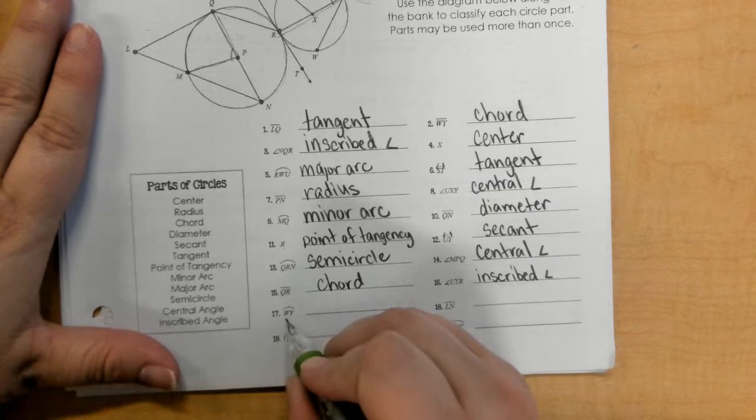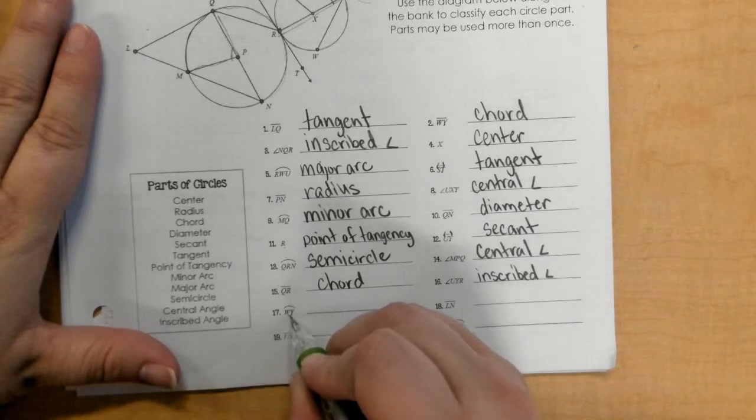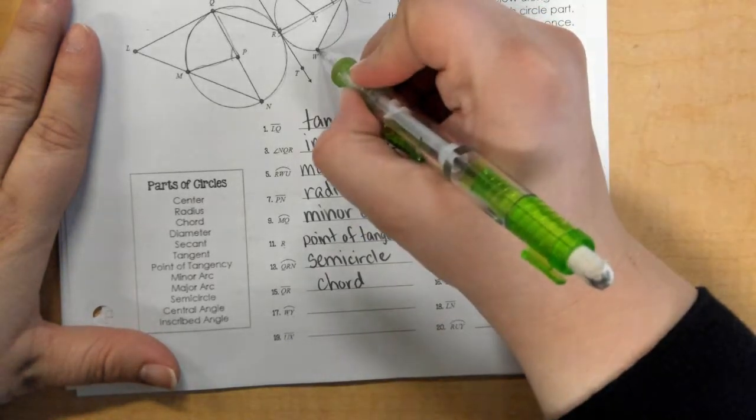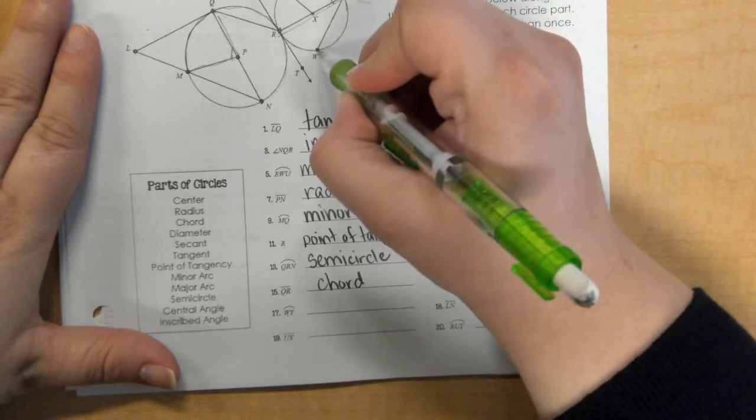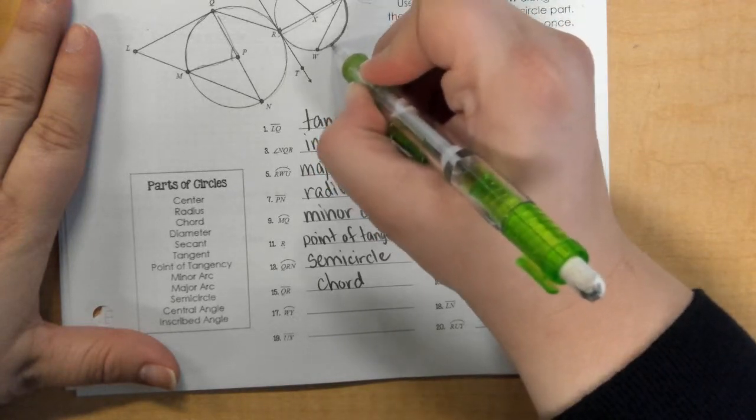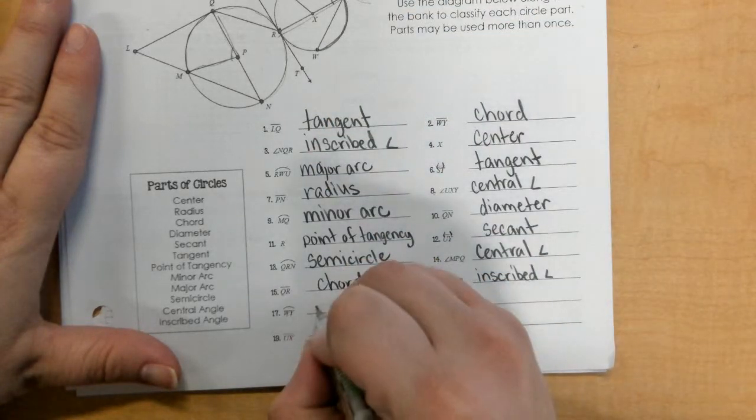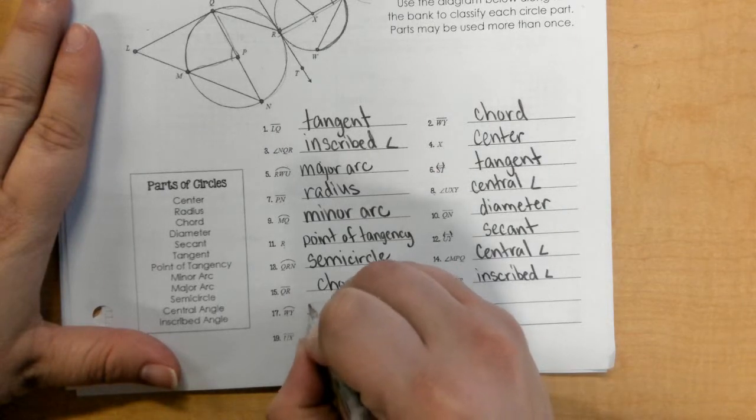Number 17, and we have arc WY. Okay, WY. It's a minor only because it has two letters, so we know it has to be less than 180 degrees. So that's a minor arc.